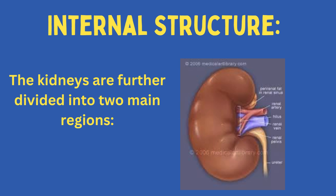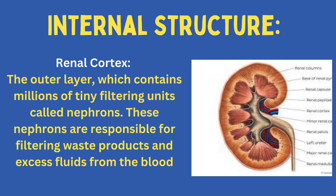Internal Structure. The kidneys are further divided into two main regions. Renal Cortex: the outer layer, which contains millions of tiny filtering units called nephrons. These nephrons are responsible for filtering waste products and excess fluids from the blood.